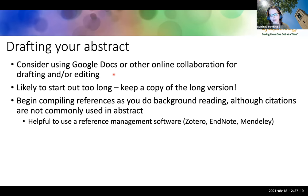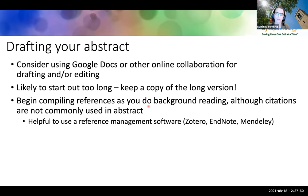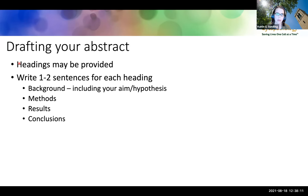When you draft your abstract, consider using Google Docs or another online collaboration tool so you can get your mentor and other important people involved early in the process. You'll very likely start out with a document that's too long — keep a copy of that long version, as it'll come in handy when writing for publication. Citations and references are not required for an abstract, but this is a great time to start compiling your references in a reference management software such as Zotero, EndNote, or Mendeley.